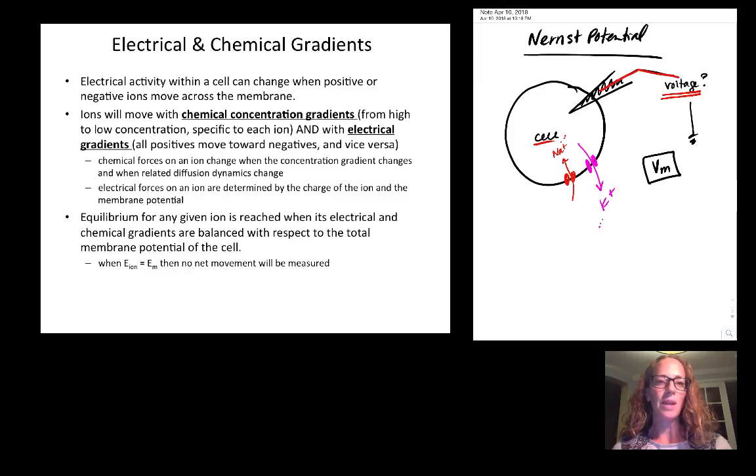Electrical and chemical gradients are going to be very important for looking at the dynamics of membrane potential. Electrical activity within a cell can change when these positive or negative ions move across the membrane. Ions will move with concentration gradients, which is a chemical gradient, diffusion from high to low concentration specific to each ion. Ions will also move with electrical gradients—all positive ions will move towards negative charge and vice versa. Negative ions will move towards positive charge.